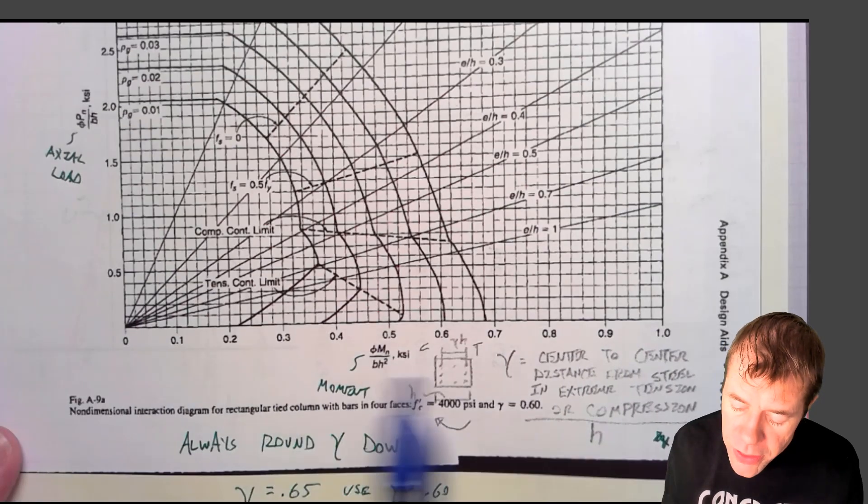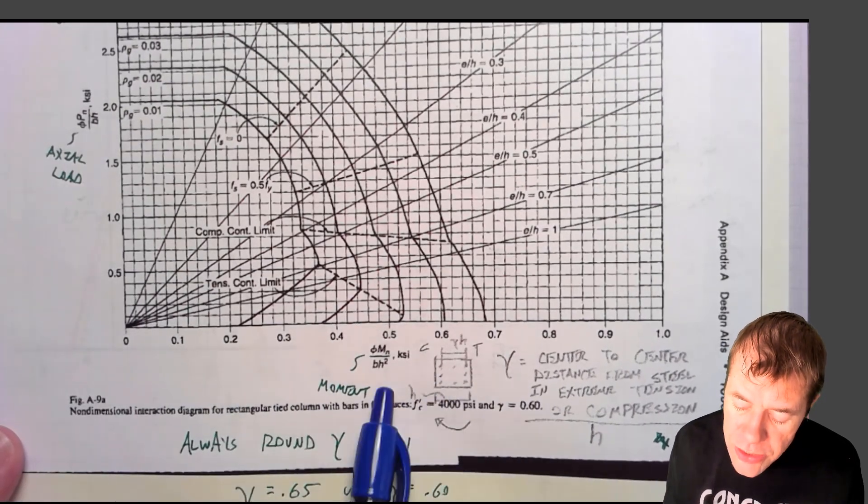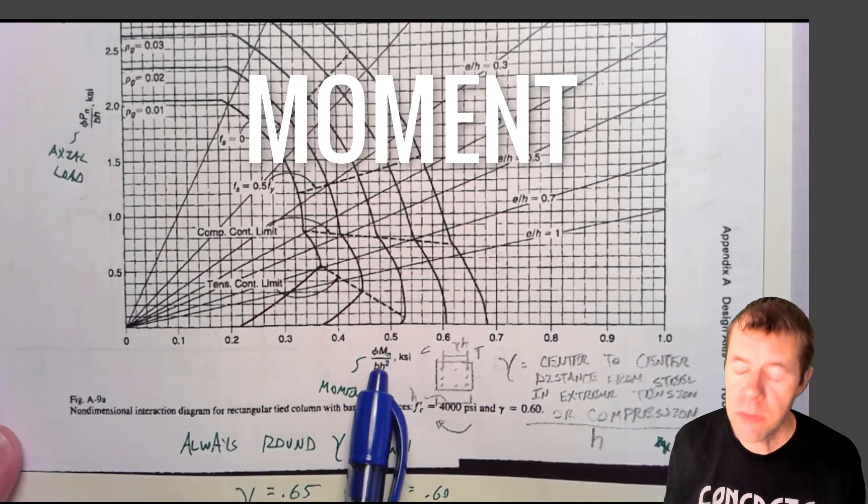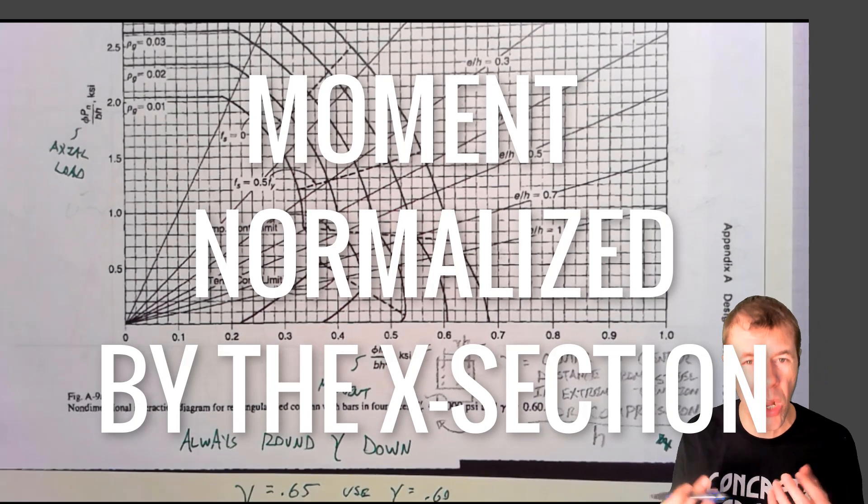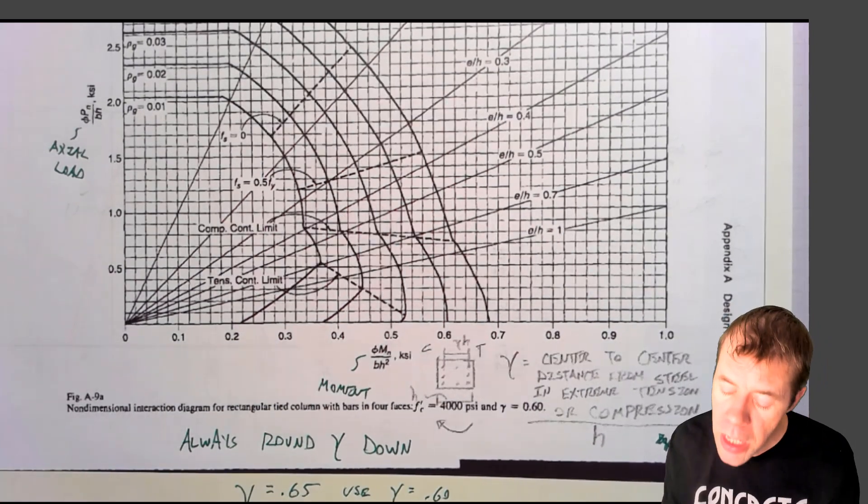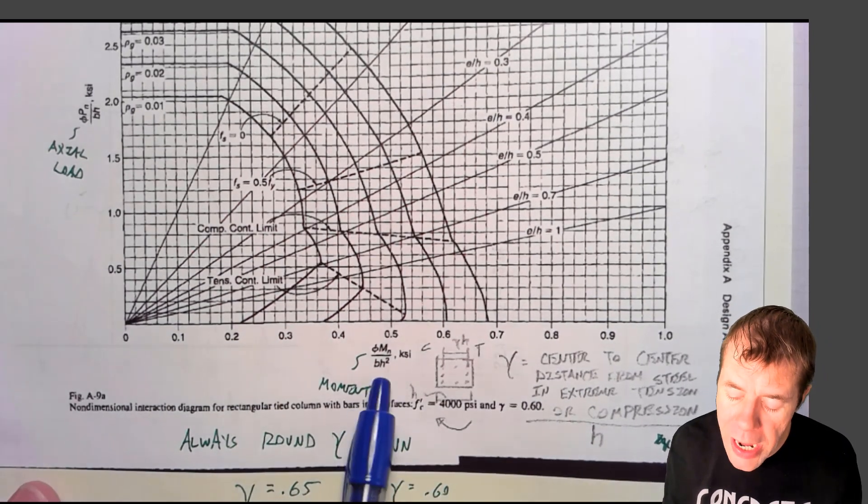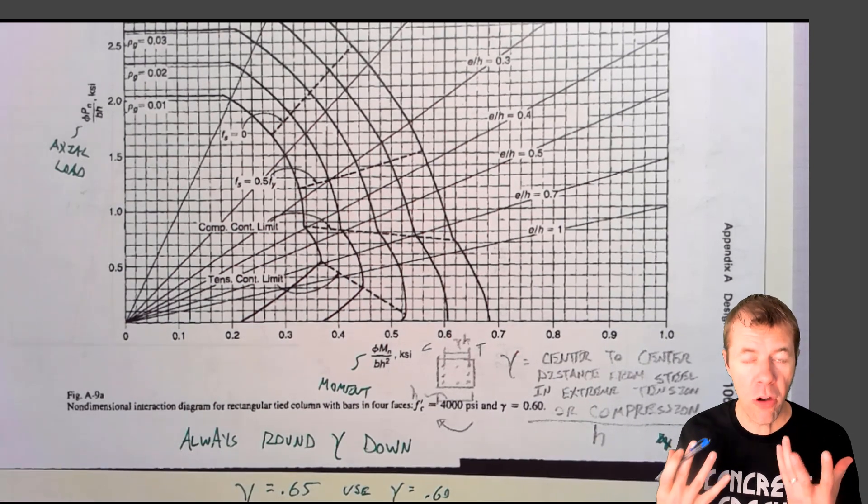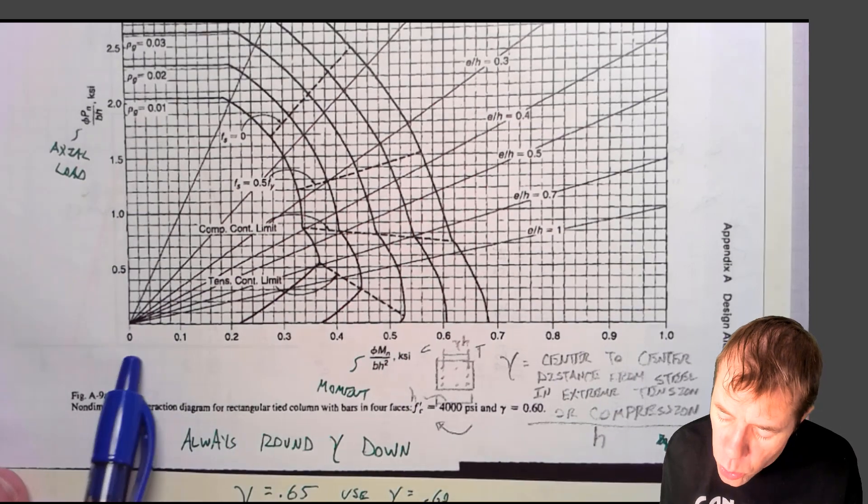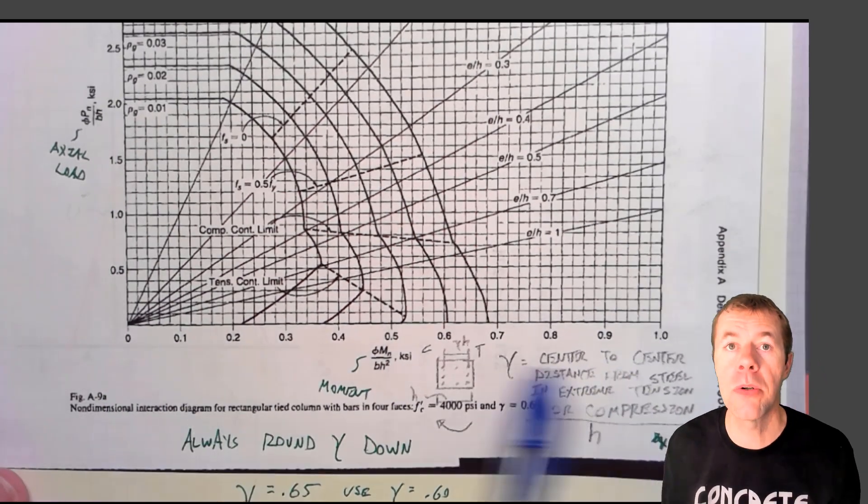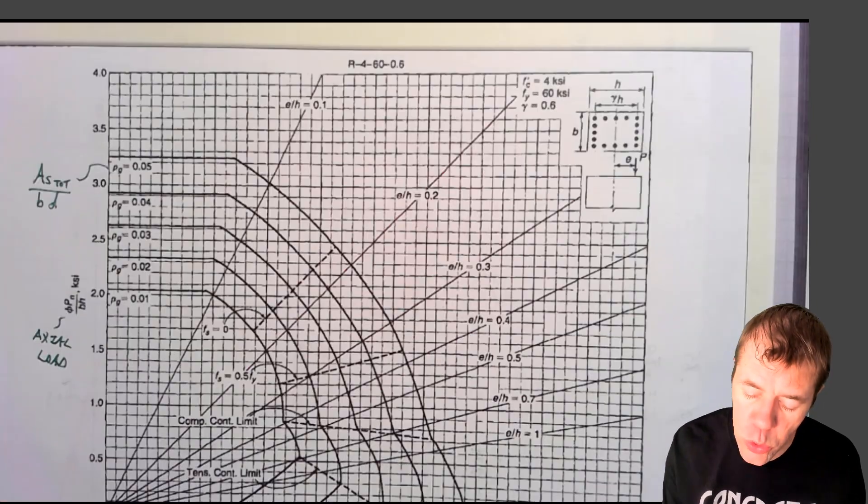This down here is your moment normalized by BH squared, or if it's a circular column, it may look a little bit different. This is normalized by the dimensions of the cross section. And you can see these numbers go typically from zero to one, and these numbers down here go from zero to about four.